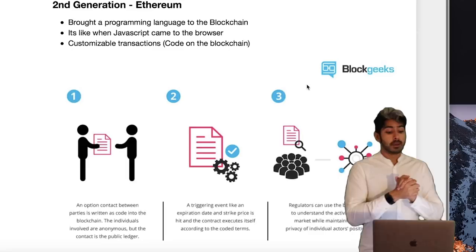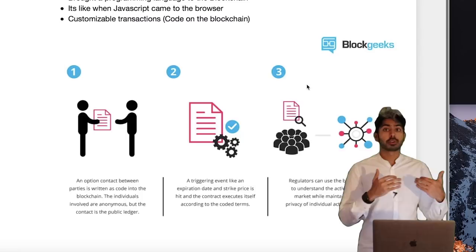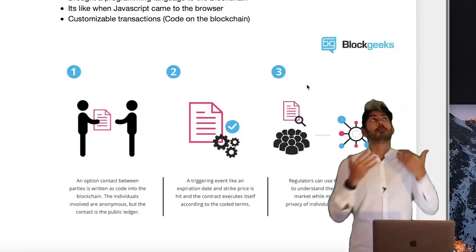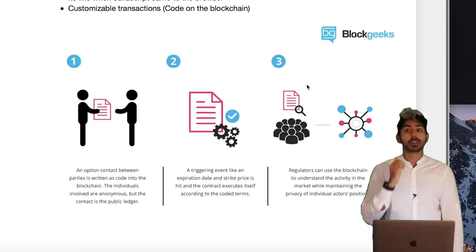It's kind of like when JavaScript came to the browser. Before JavaScript, all web pages were static — you had HTML and CSS. But once JavaScript entered the browser, we were able to do dynamic things and add many more features than we could before. So Ethereum allows for customizable transactions — code on the blockchain.